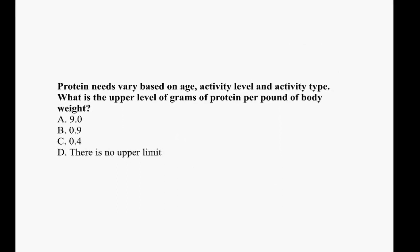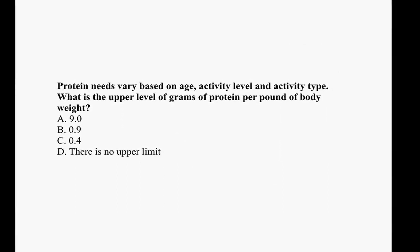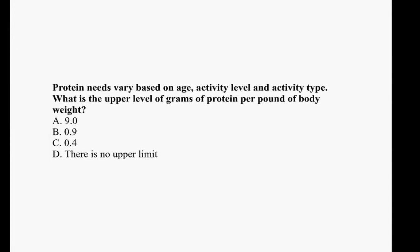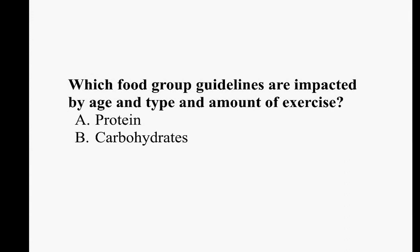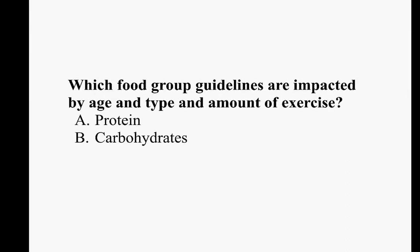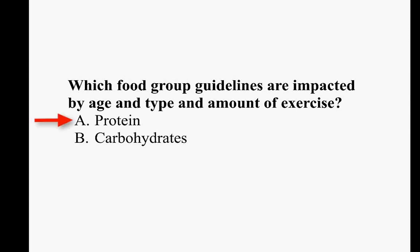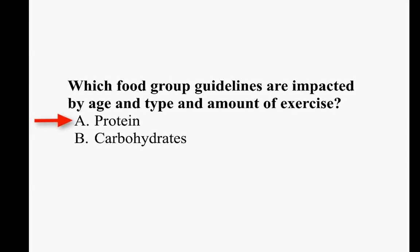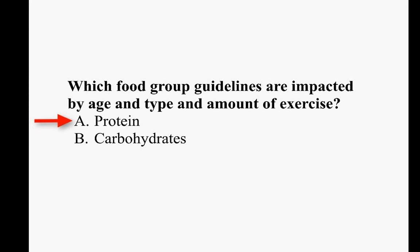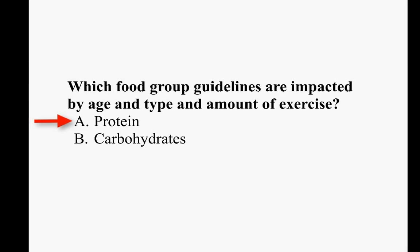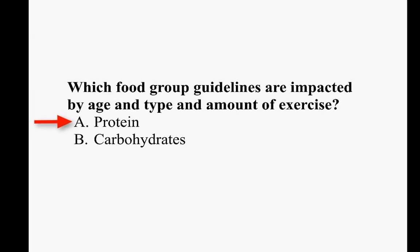Here is a question to check your knowledge. The correct answer is B: 0.9 grams of protein per pound of body weight. This is true even for athletes working on building muscle mass. How about this question? The correct answer is A — your age and activity type and amount determines your protein needs. Now that we've worked out these calculations together, please work with a partner to determine your own carbohydrate and protein needs based on your body weight, activity level, and type.